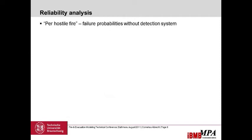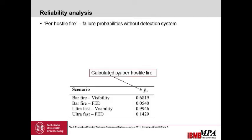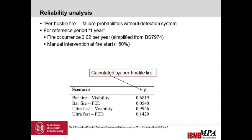I calculated per-hostile-fire probabilities — meaning you assume a fire has already started. These probabilities are actually really high: for the bar fire, it's about 70% failure, meaning visibility of around 10 meters is underrun before the last person has left. For the FED value, it's around 5% for the bar fire, and for the ultra-fast scenario, visibility is underrun nearly all the time. For incapacitation it's about 15%. But these are per-hostile-fire, and we need a fire probability of occurrence of approximately 2% per year — a simplified assumption from the British Standard.